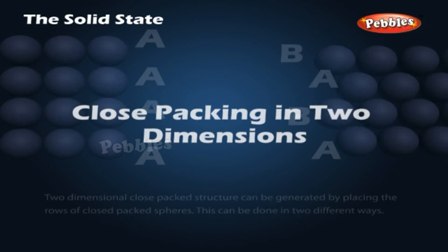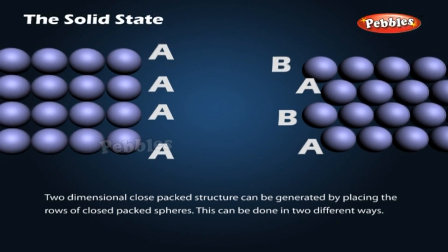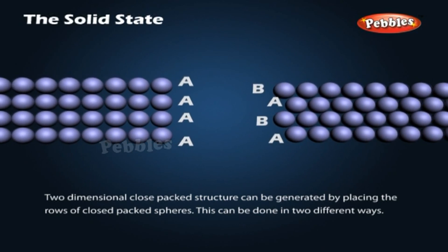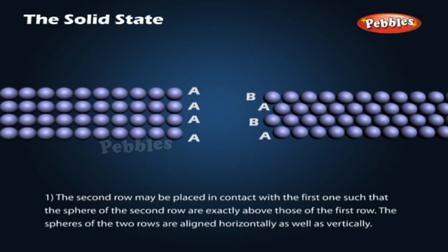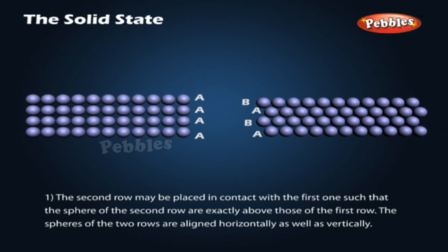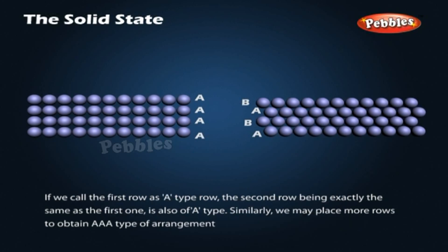Close packing in two dimensions. A two-dimensional close-packed structure can be generated by placing rows of close-packed spheres in two different ways. In the first way, the second row is placed in contact with the first such that the spheres of the second row are exactly above those of the first row, with spheres aligned horizontally and vertically. If the first row is called A type, the second row is also of A type, giving an AAA type arrangement.